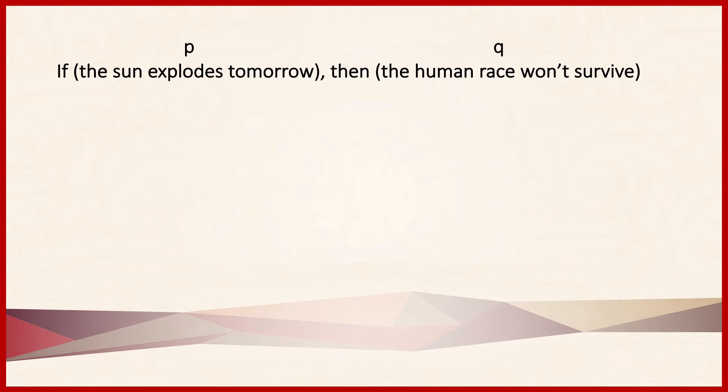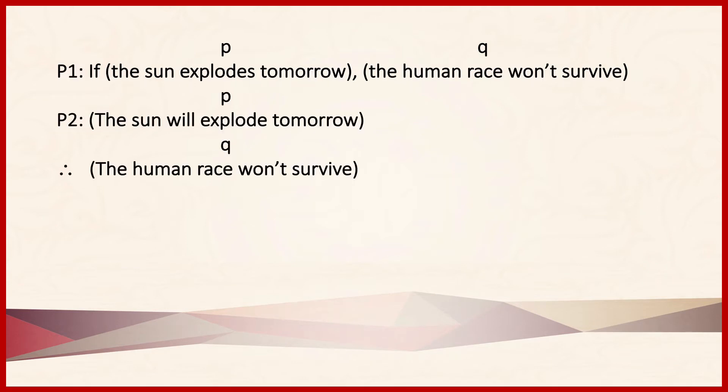Based on that labeling, we can then label the rest of the argument in which this proposition might appear. Here would be an example. Premise one: if the sun explodes tomorrow, the human race won't survive. Premise two: the sun will explode tomorrow. Conclusion: the human race won't survive.